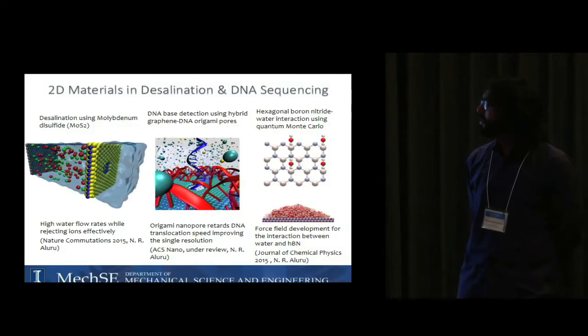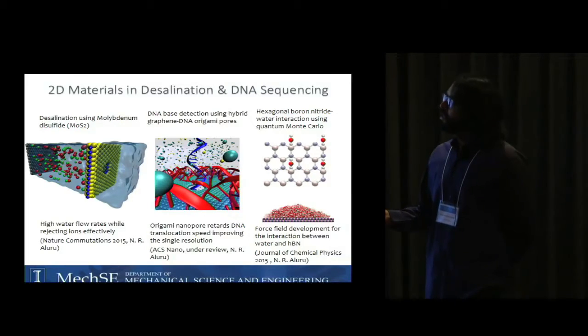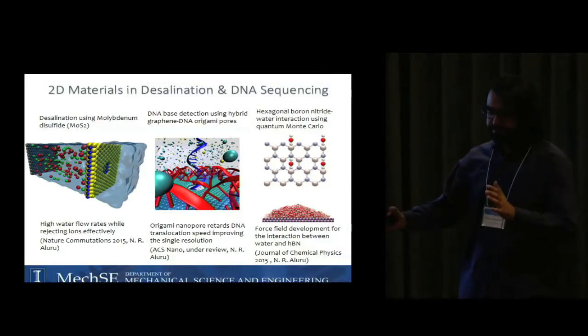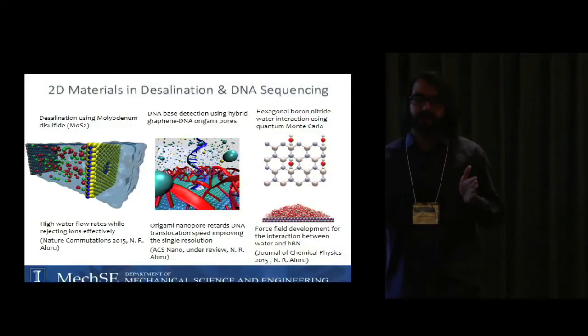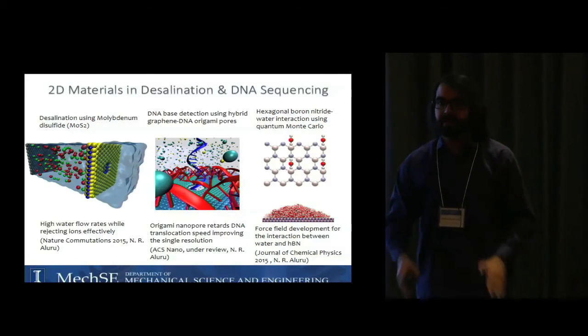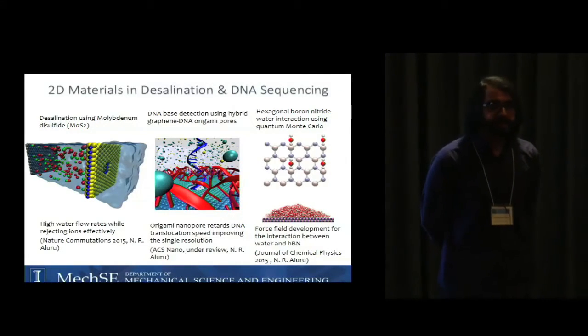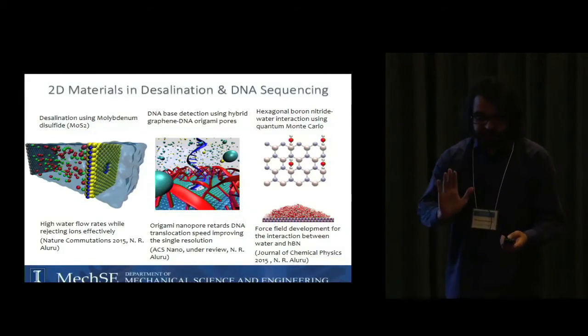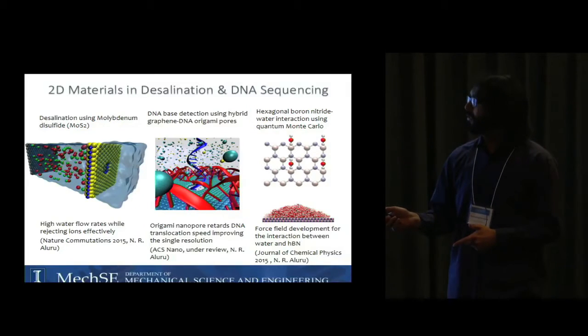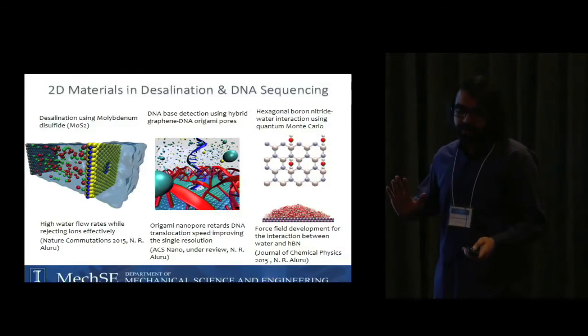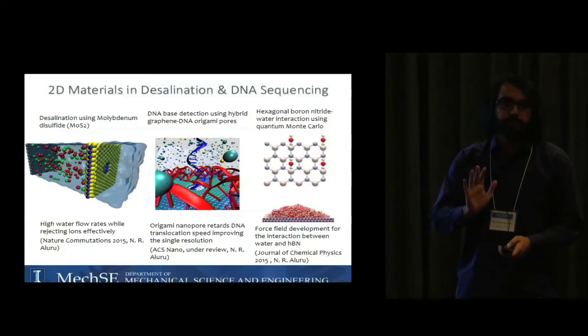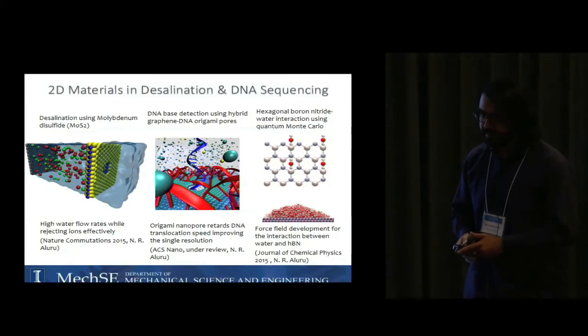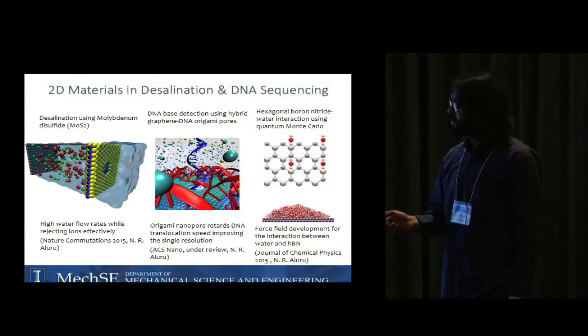molybdenum disulfide. Here we mainly showed that we can reject salt ions through these MoS2 porous membranes while we have very high water permeation rates. That's very important because given a pressure that we apply in water desalination, we can purify more water if the permeation rate is higher.